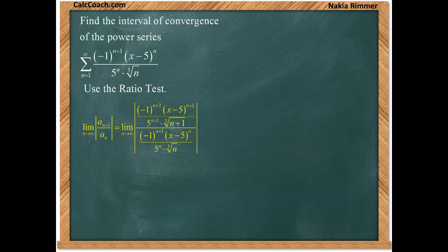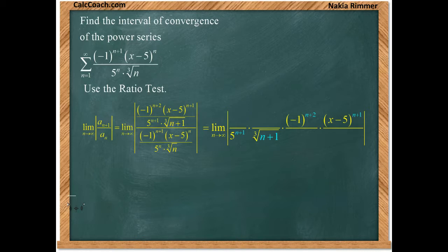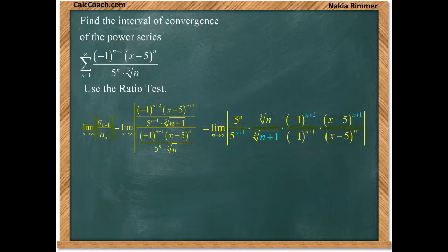So instead of 5 to the n, we'd have 5 to the n plus 1 in the denominator of one fraction. Instead of cube root of n, we'd have cube root of n plus 1 in the denominator of another fraction. In the numerator of a third fraction, we have negative 1 to the n plus 2, because it's n plus 1 plus another 1. And then we have x minus 5 to the n plus 1. When you multiply by the reciprocal of the a sub n terms, we put the corresponding term from a sub n in each gap: 5 to the n above 5 to the n plus 1, cube root of n above cube root of n plus 1, negative 1 to the n plus 1 below negative 1 to the n plus 2, and x minus 5 to the n below x minus 5 to the n plus 1.